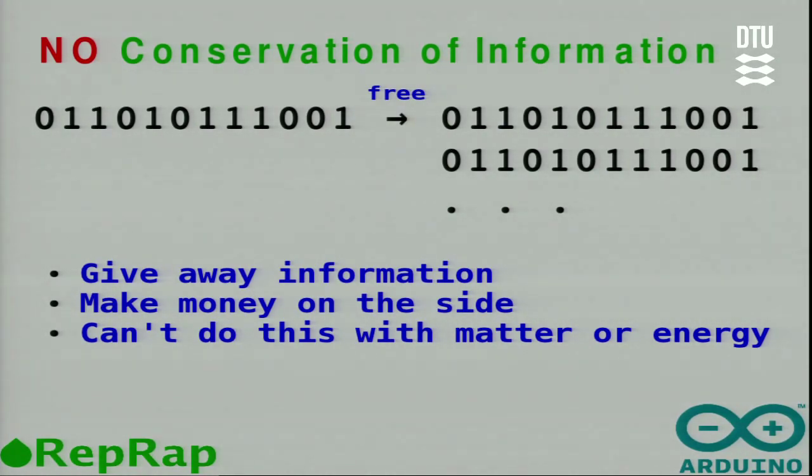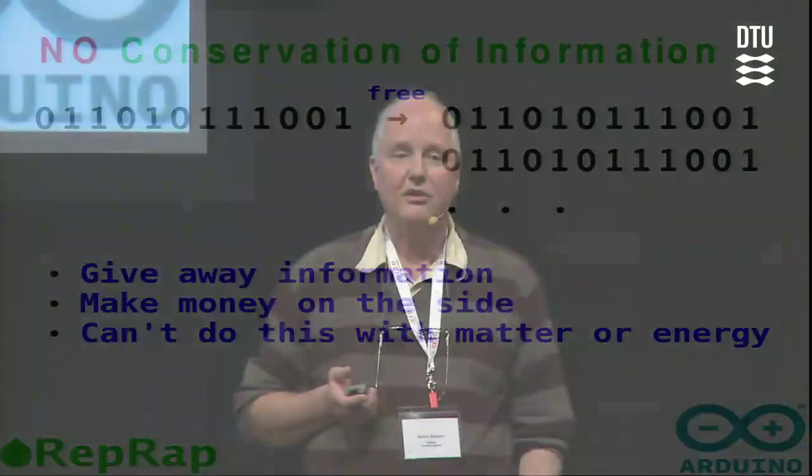You can take a pattern of ones and noughts — that is to say, you can take some information — and you can make a copy of it essentially free. Thermodynamics and quantum mechanics insist that you expend a tiny amount of energy to copy a bit of information faithfully, but from the perspective of the human economy, copying information is essentially free. You can make as many copies as you like. That's the reason why you can give information away, and if you can figure out a way of making money on the side, you've got a potentially successful model.